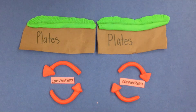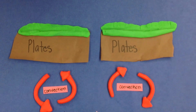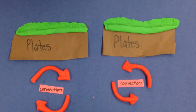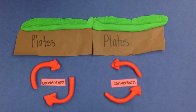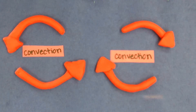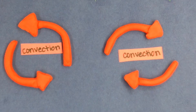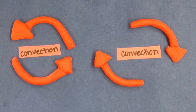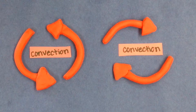Convection is the system under the earth that spreads plates apart and puts them together. When this happens, the magma goes up, cools down, and comes down in an ongoing system, which is called convection.